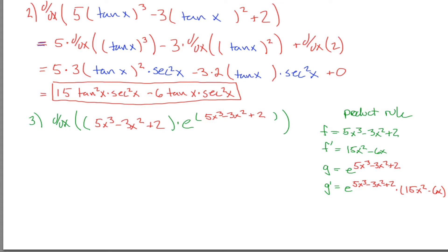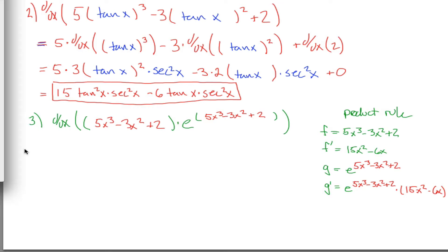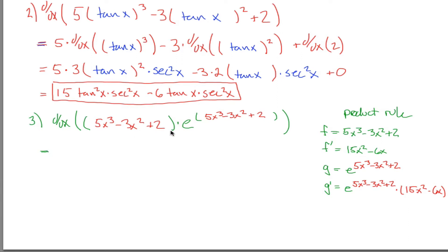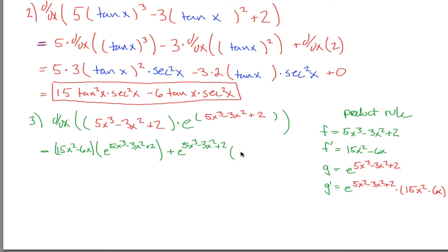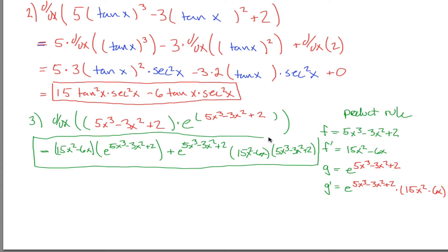Now that I have all these pieces, I can rewrite them. The product rule gives f prime times g plus g prime times f. So that's: (15x squared minus 6x) times e to the (5x cubed minus 3x squared plus 2), plus e to the (5x cubed minus 3x squared plus 2) times (15x squared minus 6x), all times (5x cubed minus 3x squared plus 2). This right here is my final answer.